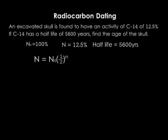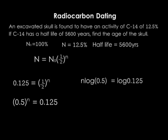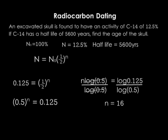Using N = N₀ × (1/2)^n: 12.5 = 100 × (1/2)^n. Dividing both sides by 100 gives 0.125 = (0.5)^n. Introducing logarithms: n × log(0.5) = log(0.125). Dividing both sides by log(0.5), n = 3. So there are 3 half-lives. Each half-life is 5600 years, so the total age is 3 × 5600 = 16,800 years. That is the age of this skull.